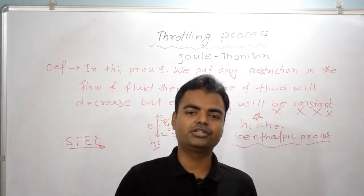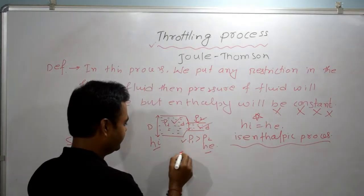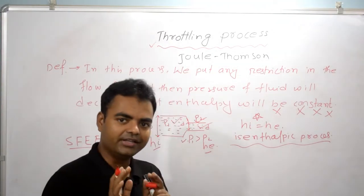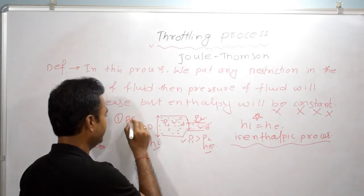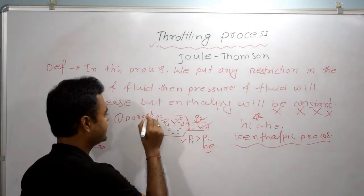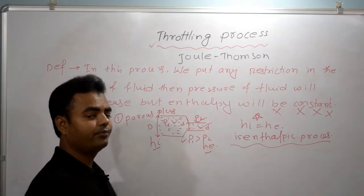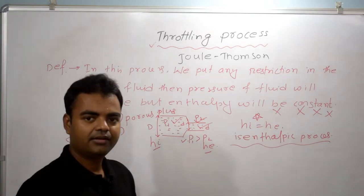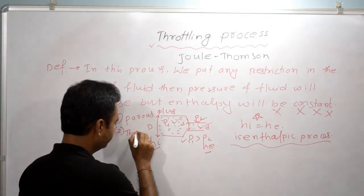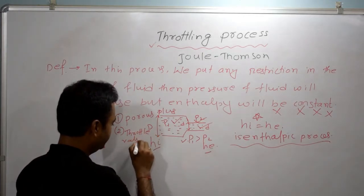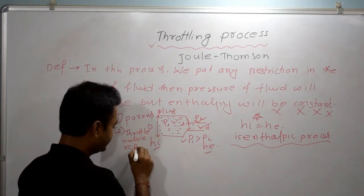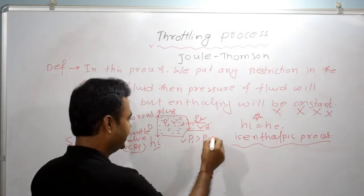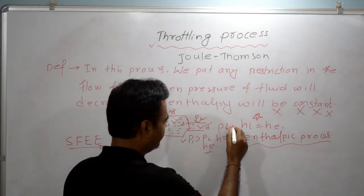First let me share a few applications. When flow of fluid is going through a porous plug, that is an example of the throttling process or Joule-Thomson process. Second, in the case of a throttle valve — in VCRS (vapour compression refrigeration system), after the condenser we use a throttle valve to decrease pressure and maintain enthalpy as constant.